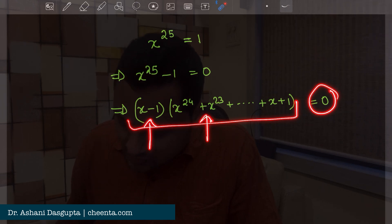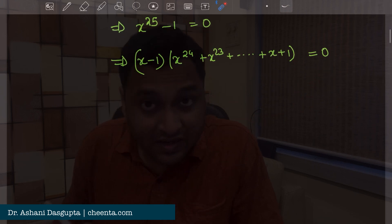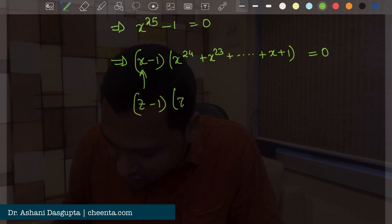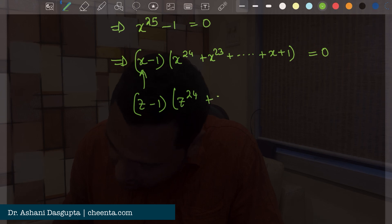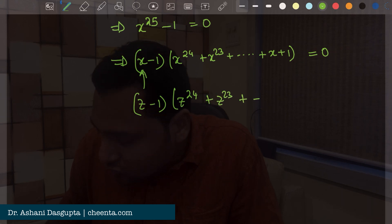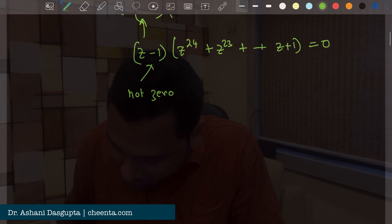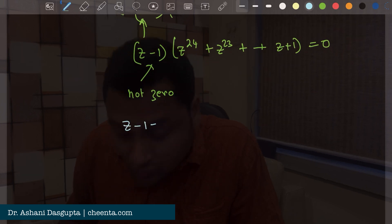Now x minus 1 is not 0 in this particular case. So if I plug in z in this equation, I know that z minus 1 this is not 0. Why? Because if it was 0, if z minus 1 is equal to 0 this would imply z is equal to 1.